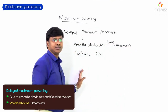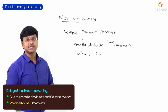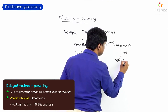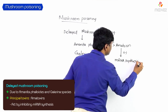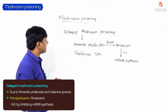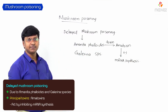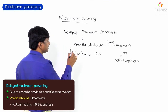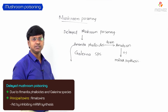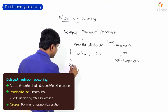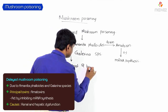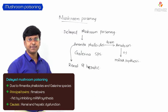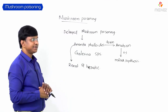Amatoxins act by inhibiting mRNA synthesis. Amanita phalloides or amatoxin causes both renal and hepatic dysfunction in affected individuals.